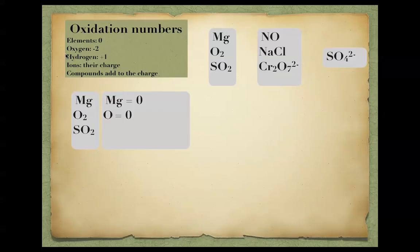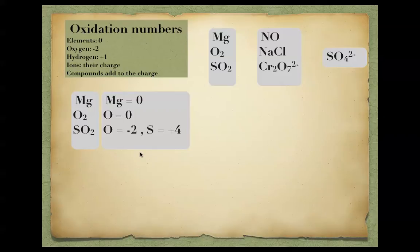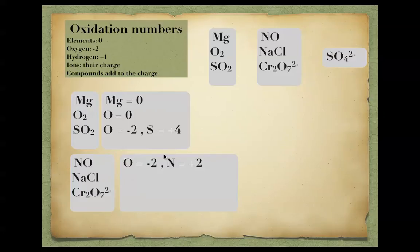For Nitrogen Oxide (NO), Oxygen in a compound is -2, so Nitrogen must be +2 to balance to zero overall charge. For Sodium Chloride (NaCl), there is no Oxygen or Hydrogen, so we use the ionic charges: Sodium ion is always +1 and Chlorine ion is always -1. Sodium is in the first column of the periodic table so it is +1, and Chlorine is in the seventh column so it is -1.